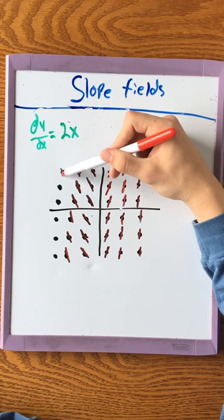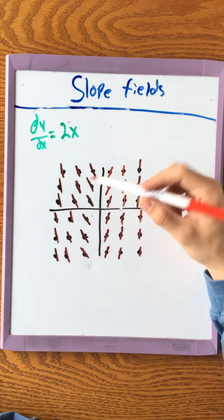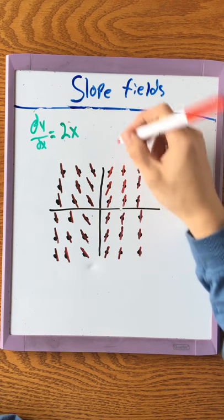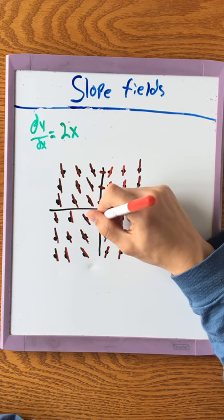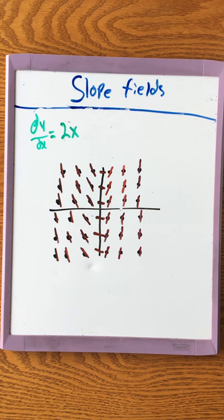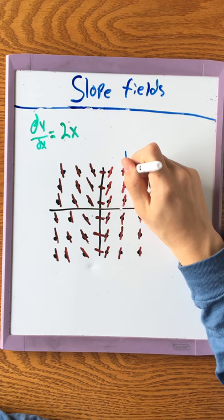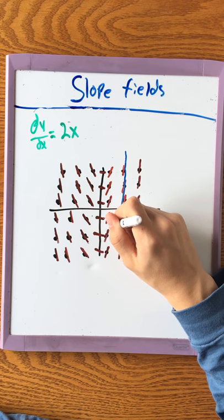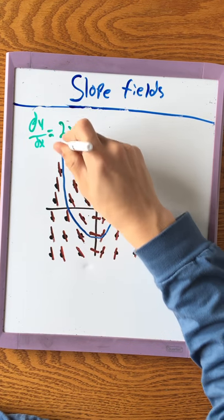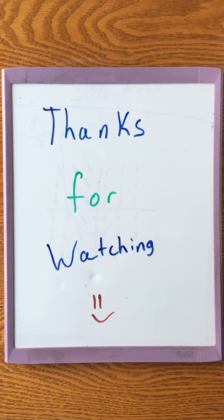Continuing: negative 12 makes it very steep, and plugging in 0 gives 0, so those points are all flat. Following the slopes, the graph flattens out and then gets steep. That's it — I hope these mini lessons helped you better understand calculus. Thanks for watching.